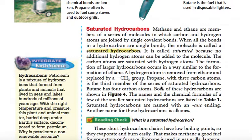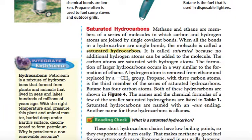Methane and ethane are members of a series of molecules in which carbon and hydrogen atoms are joined by single covalent bonds. When all the bonds in a hydrocarbon are single bonds, the molecule is called a saturated hydrocarbon. It is called saturated because no additional hydrogen atoms can be added to the molecule — the carbon atoms are saturated with hydrogen atoms. The formation of larger hydrocarbons occurs similarly: a hydrogen atom is removed from ethane and replaced by a CH3 group. Propane has three carbon atoms, butane has four. Saturated hydrocarbons are named with an -ANE ending and are called alkanes.